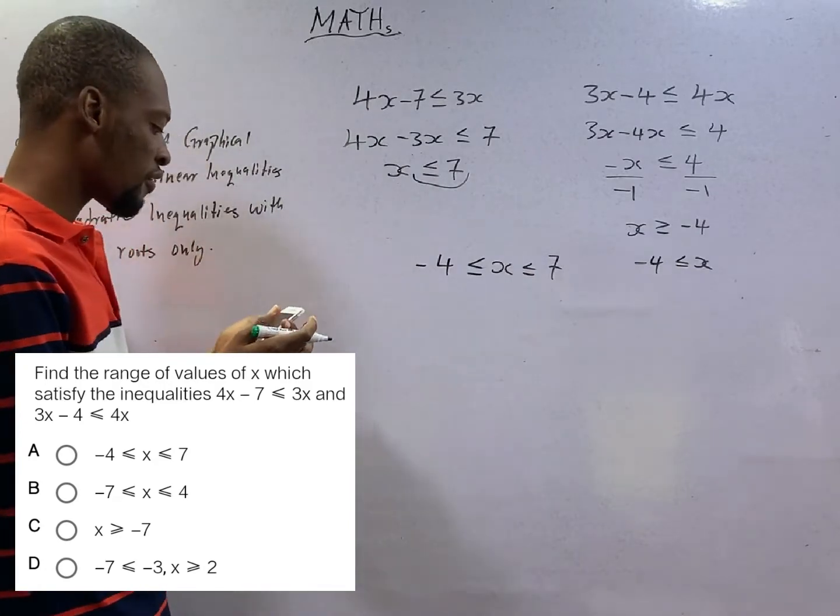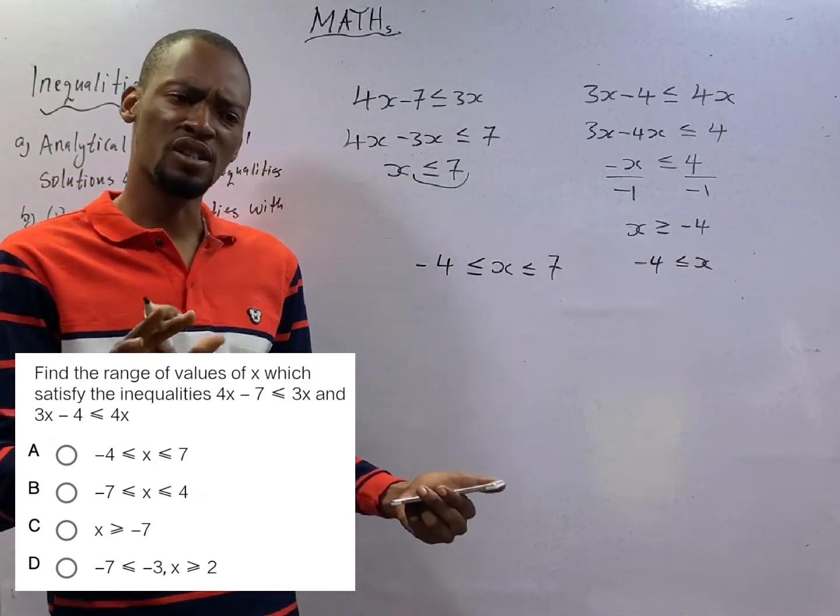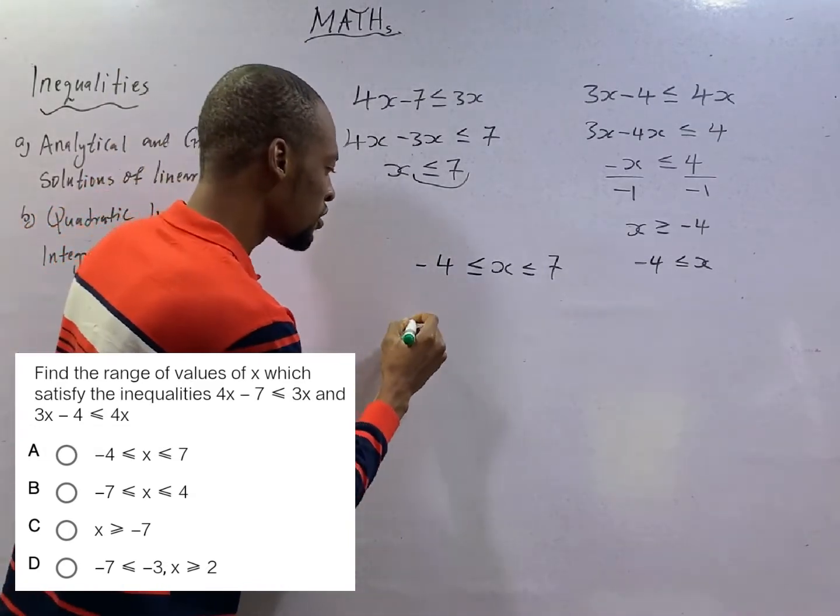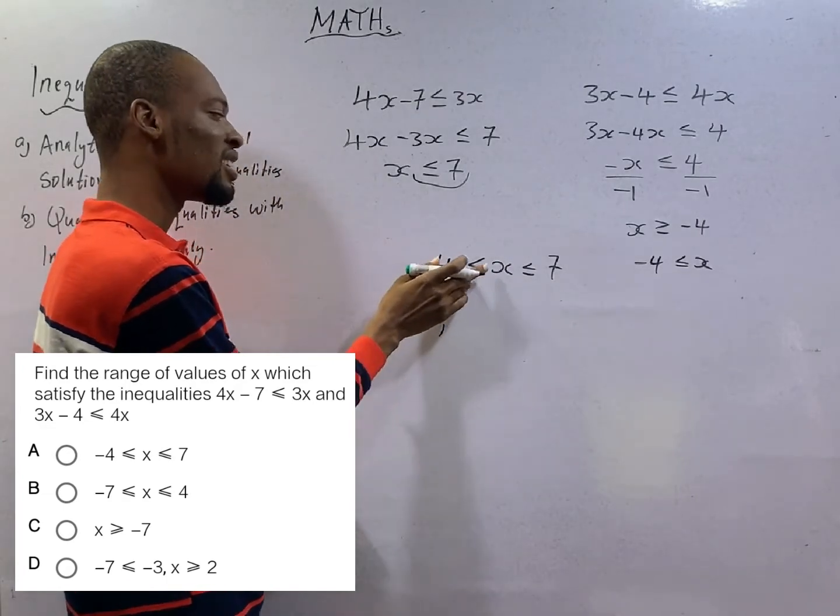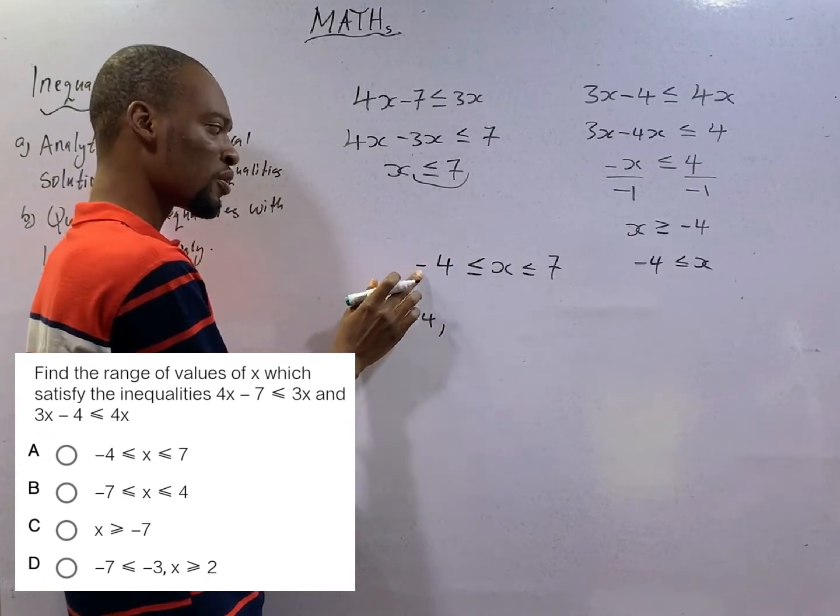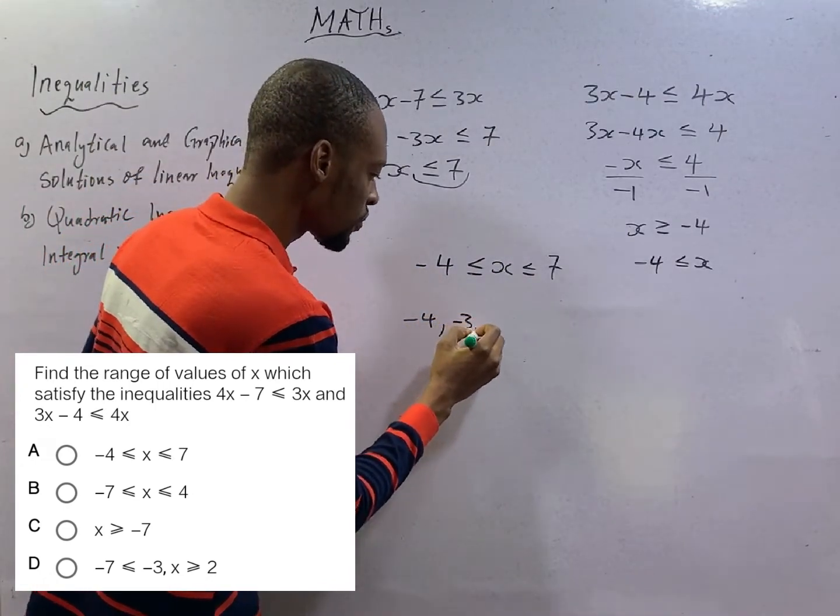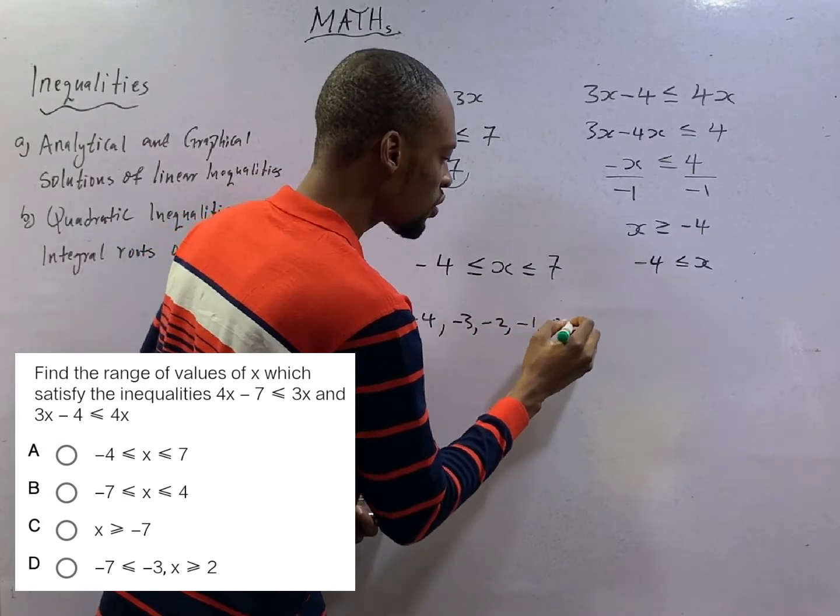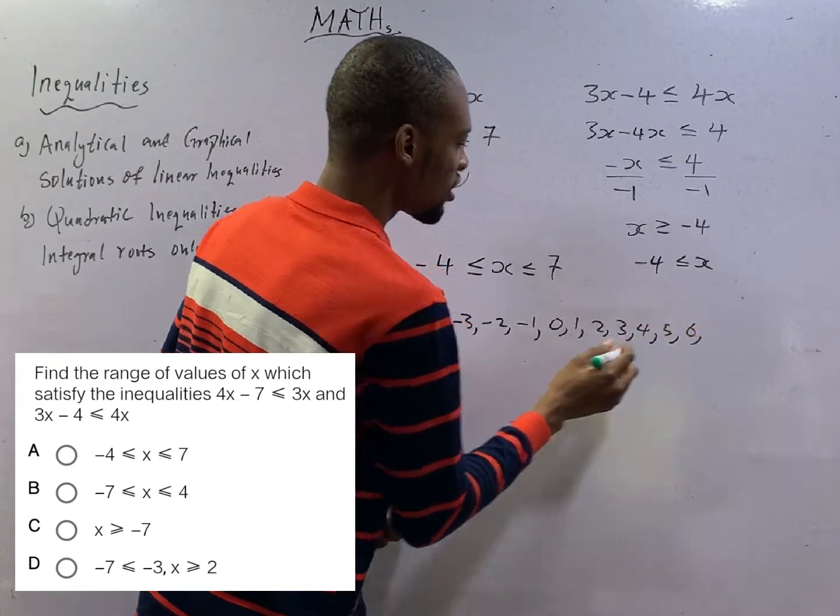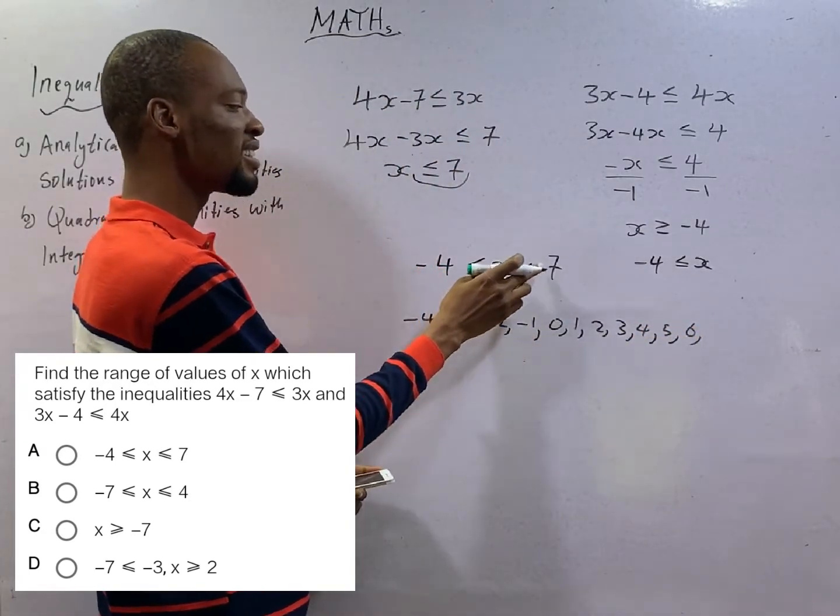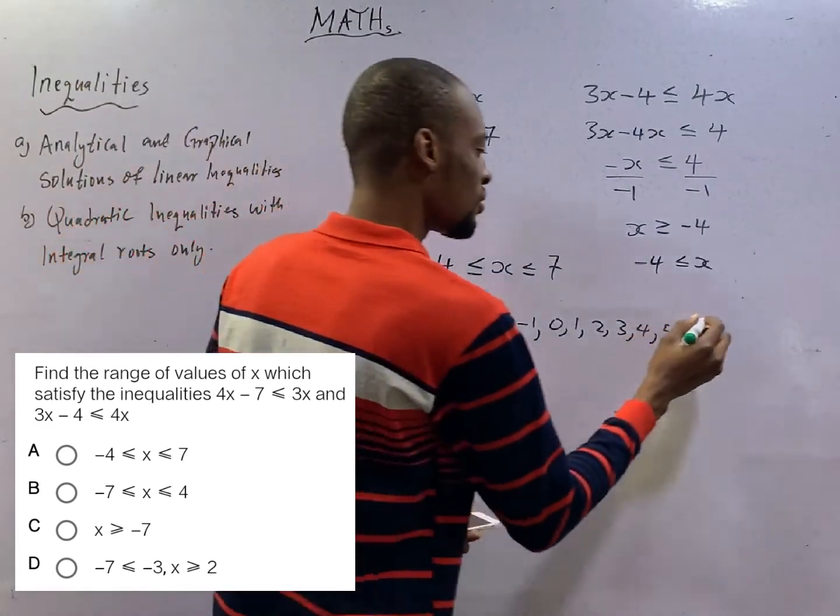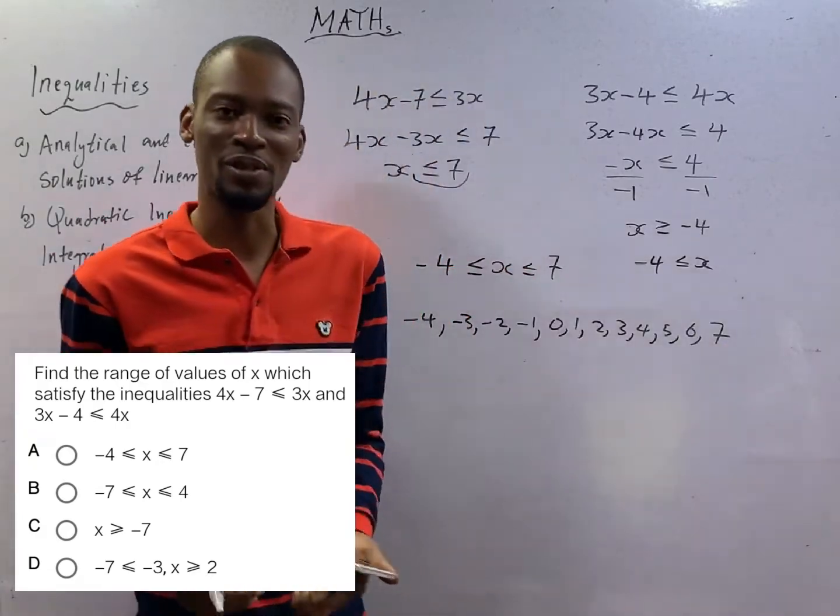So this is the range of values. If we are asked for the integral values, to bring out the values, the values will simply be, there is -4. Since -4 is less than or equal to x, it means x is greater than or equal to -4. So x will begin from -4, -3, -2, -1, 0, 1, 2, 3, 4, 5, 6. And they told us that x is less than or equal to 7. So since there is equal to, x will stand as 7, so 7. These are the integral values of the inequalities.